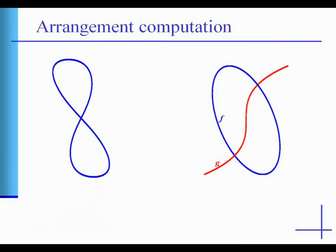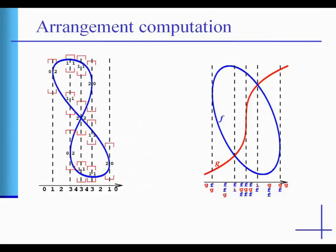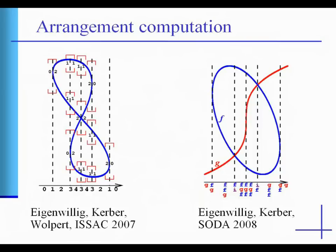The single curve analysis computes geometric information at the critical positions of the curve. The curve pair analysis captures the vertical ordering of two curves at critical positions. Recently, Eigenwillig, Kerber, and Wolpert proposed algorithms for both types of analysis.